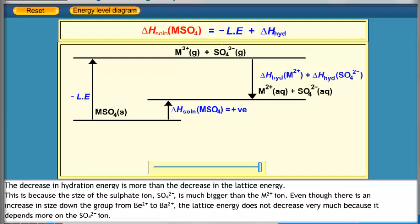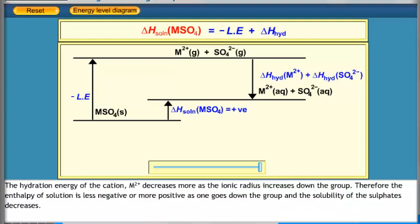Even though there is an increase in size down the group from Be2+ to Ba2+, the lattice energy does not decrease very much because it depends more on the SO42- ion. The hydration energy of the cation M2+ decreases more as the ionic radius increases down the group.